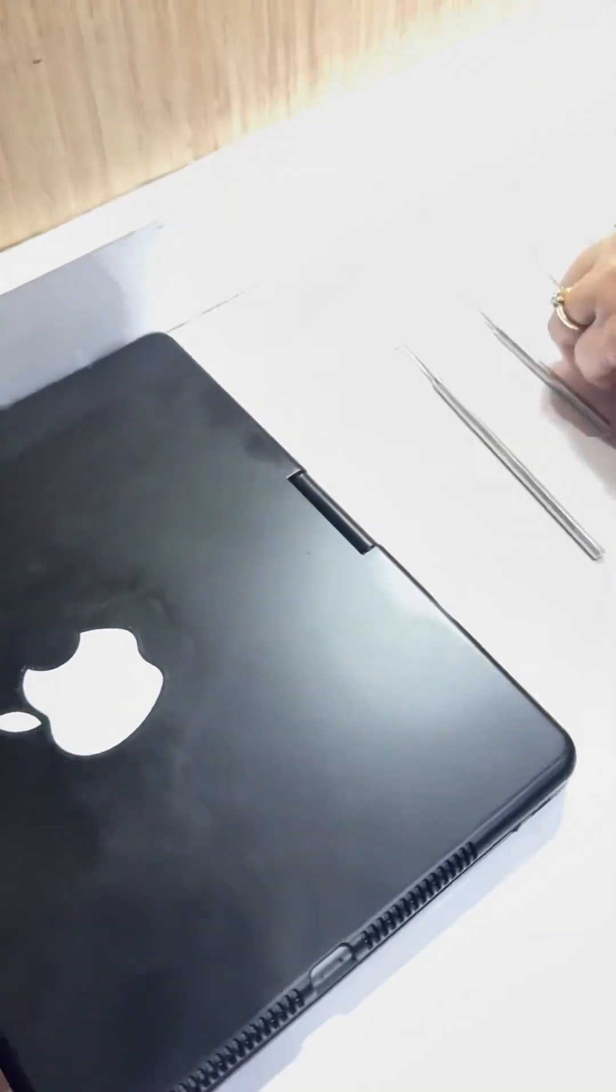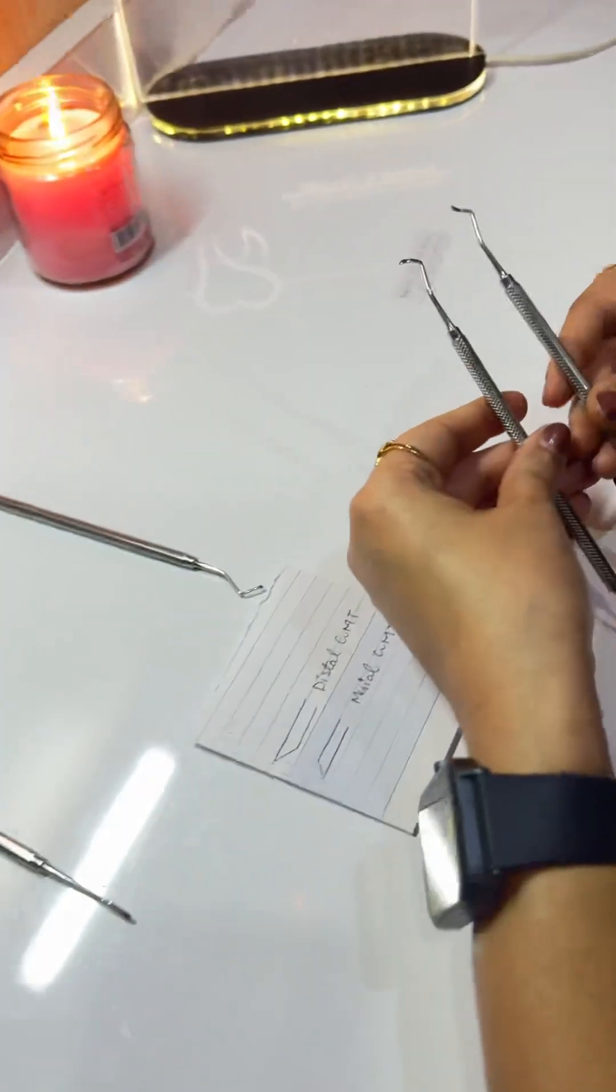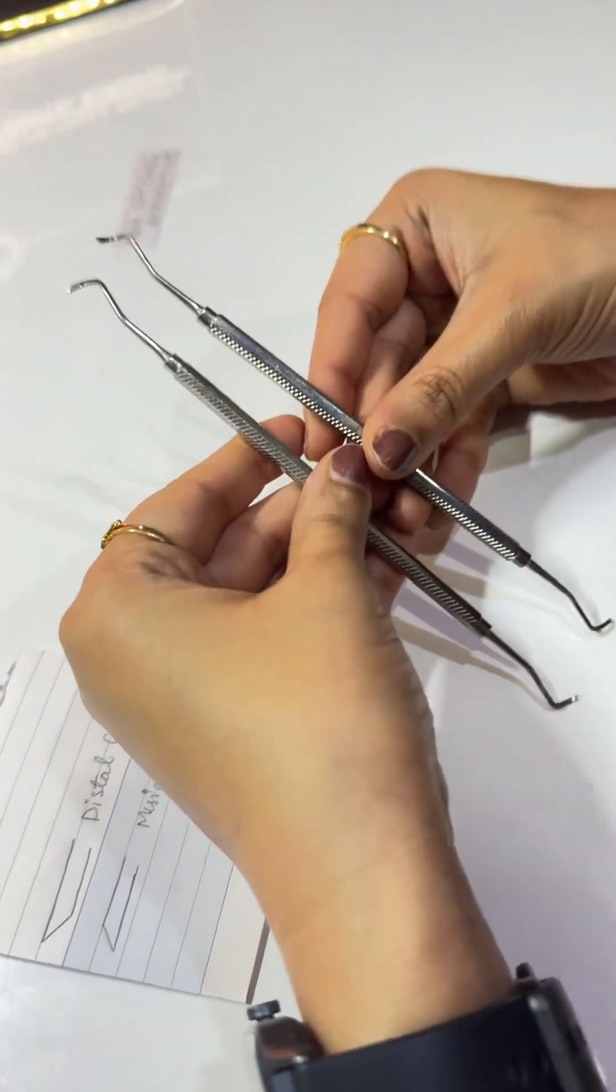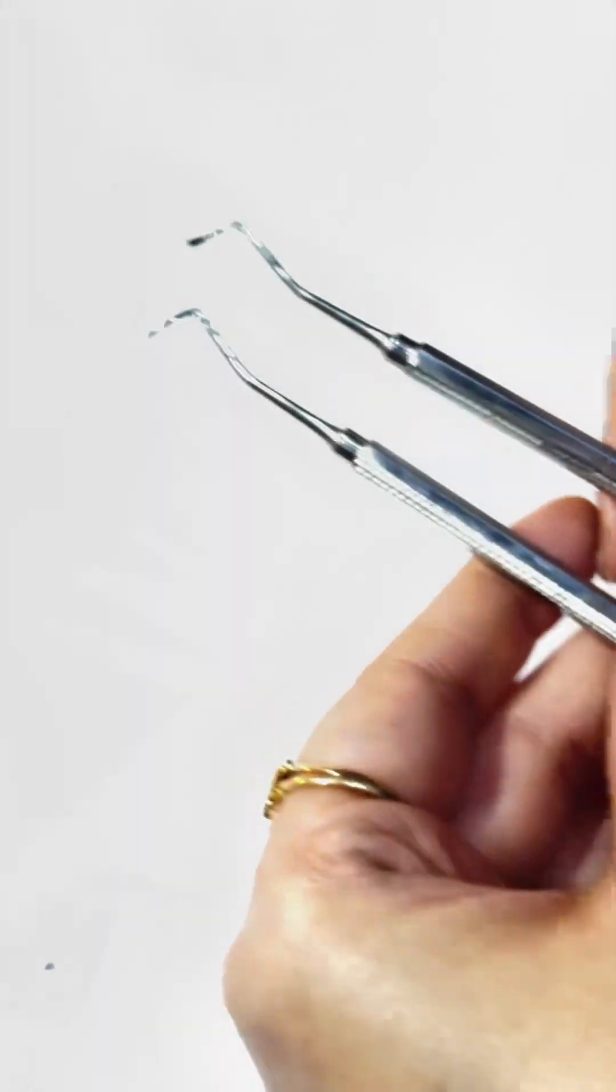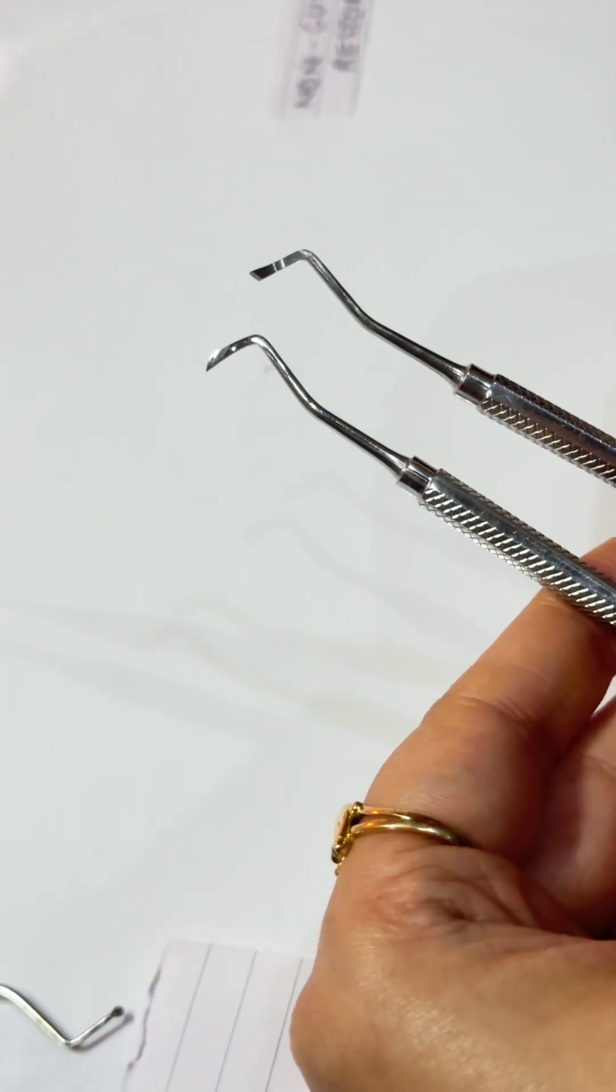Now the next instruments, these are GMTs. See the cutting edge. This is the GMT, the gingival marginal trimmer.